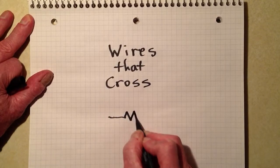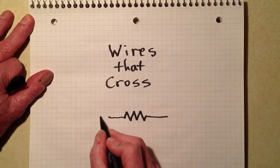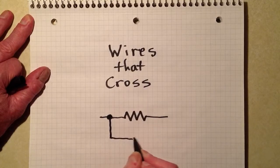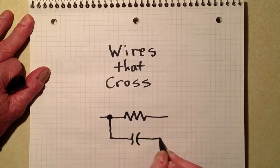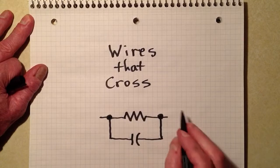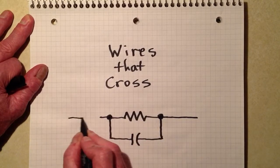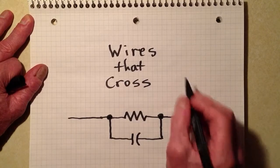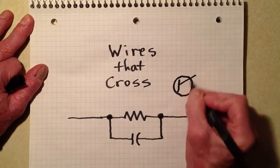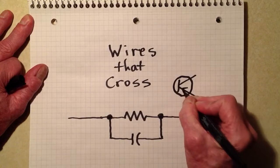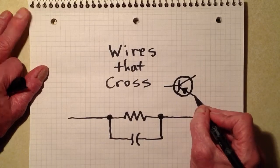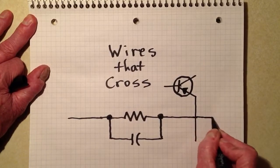For example, suppose you have a resistor connected together like this, and you also have a transistor up here. Let's make it a PNP transistor. There's the base, there's the emitter, it has to cross over this wire like that.